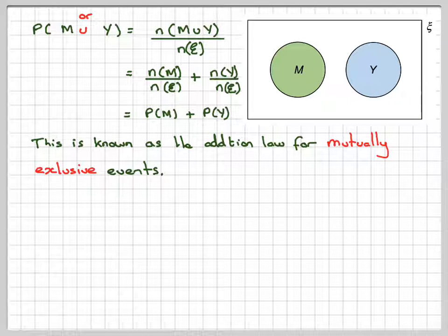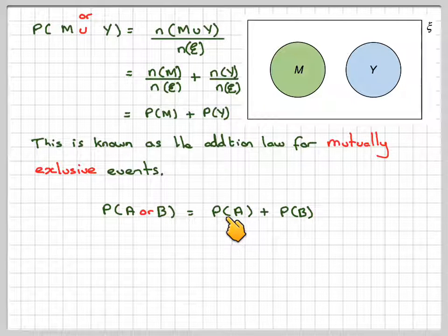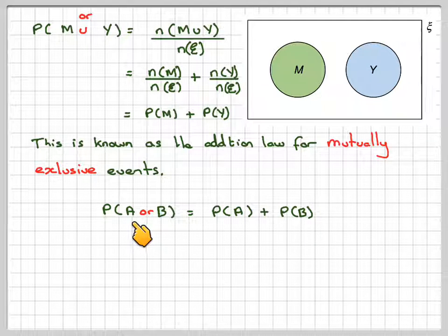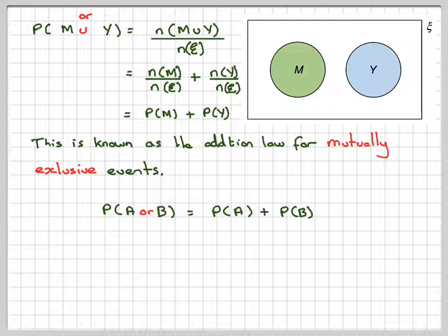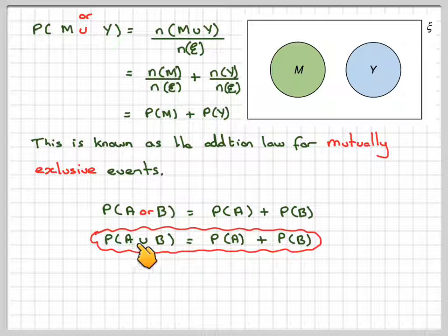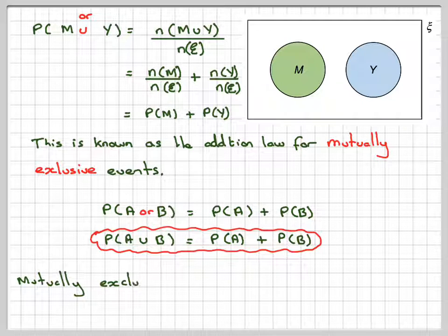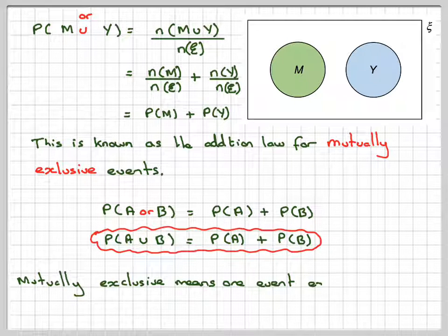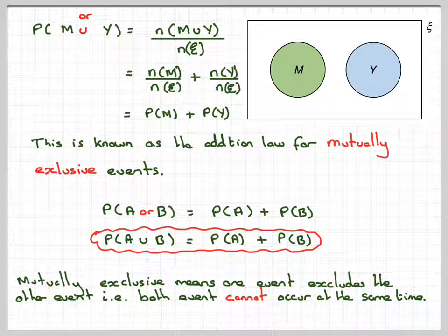So the probability of A or B is equal to the probability of A plus the probability of B. The probability of event A or event B is equal to probability of A plus probability of B, and this is written as union. So the probability of A ∪ B is the probability of A plus the probability of B. Mutually exclusive means one event excludes the other event, i.e., both events cannot occur at the same time.